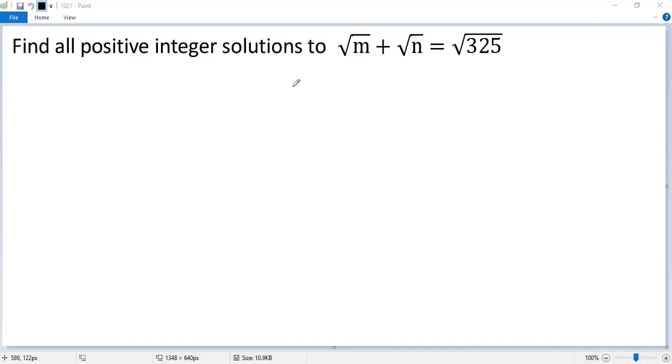To solve a nice radical equation, let's try to eliminate the square roots. To do that, both sides subtract square root of n. So we get square root of n equals square root of 325 minus square root of m.